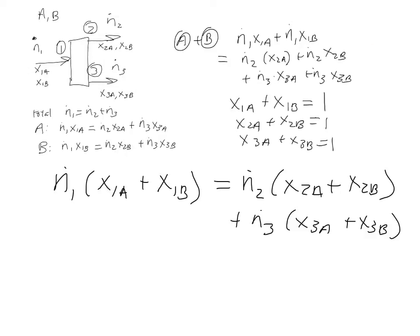And you'll notice that this part right here, what is that? Well, that equals 1. This part right here also equals 1. This part right here equals 1. So if I go ahead and simplify this equation, N1 equals N2 plus N3.